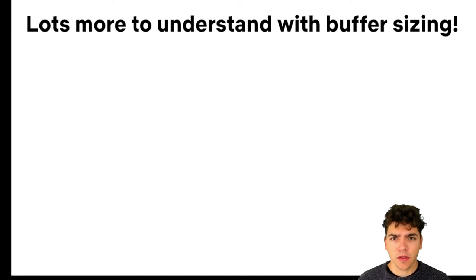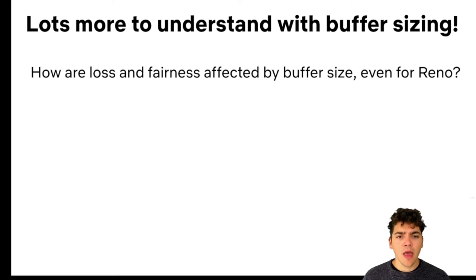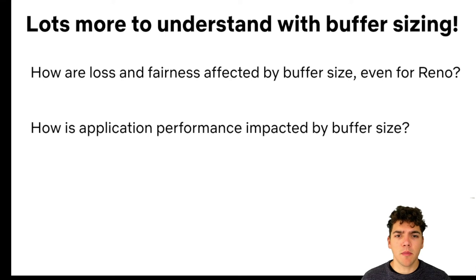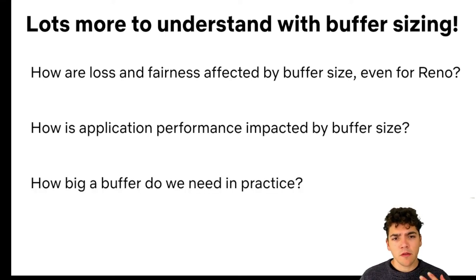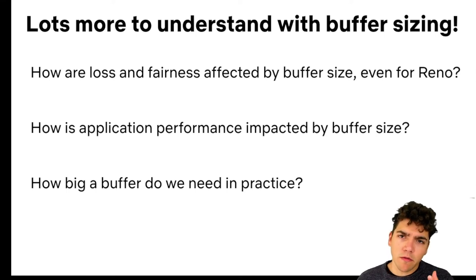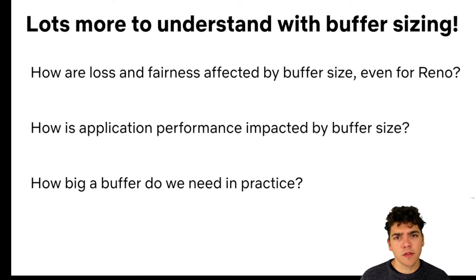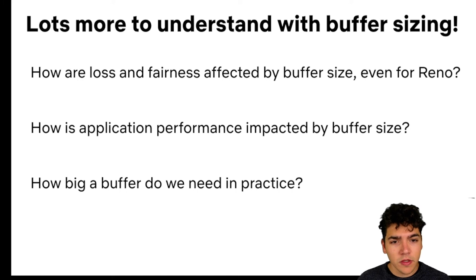There's a lot more about buffer sizing we still need to understand. Our paper focuses primarily on link utilization, but even for TCP Reno we don't understand how other things we care about — like loss and fairness — are impacted by buffer size, nor how application performance is impacted. If you're running a network today, we encourage you to run experiments and see what buffer size works well for you. If you're working on applications, think about the buffer size requirements imposed by your applications. By investing this sort of work, we should be able to dramatically reduce buffer sizes and improve performance for both applications and router builders. Thank you.